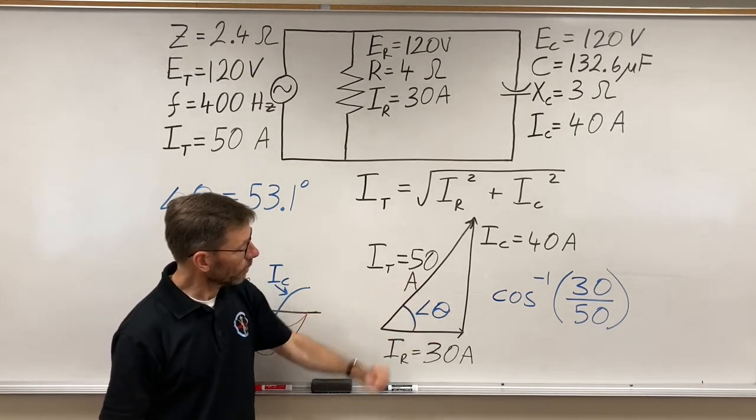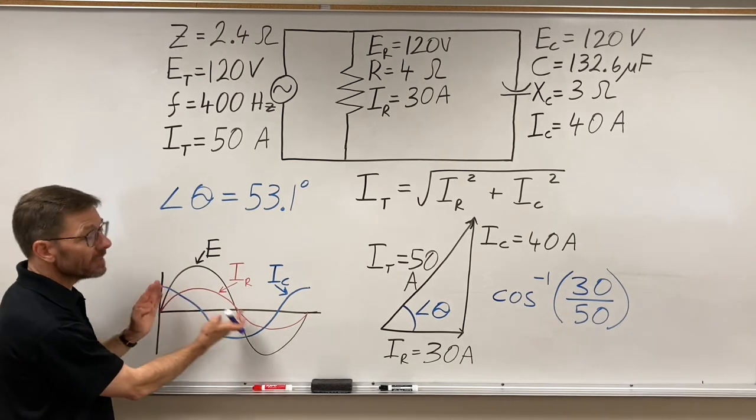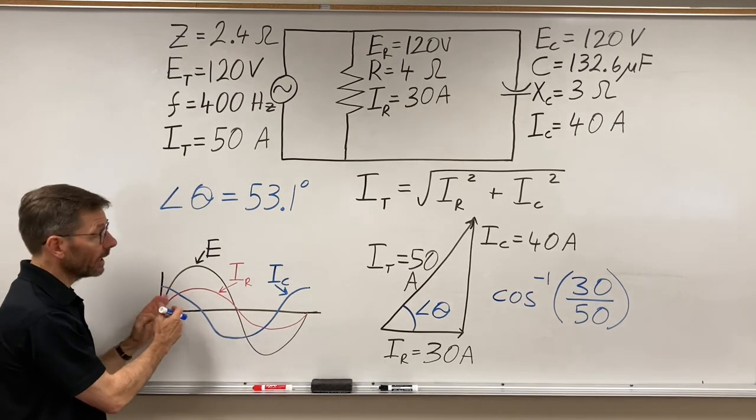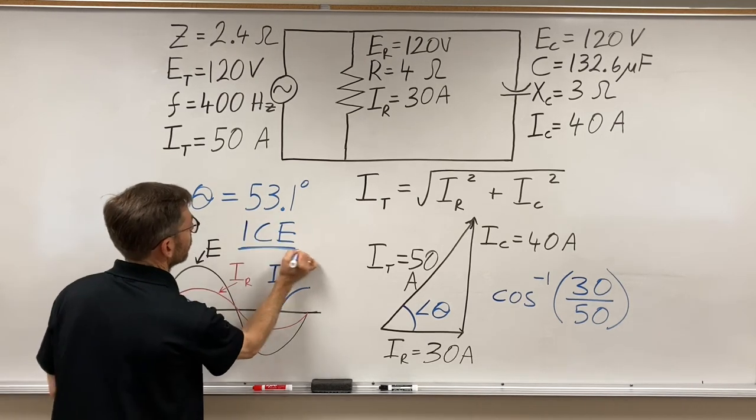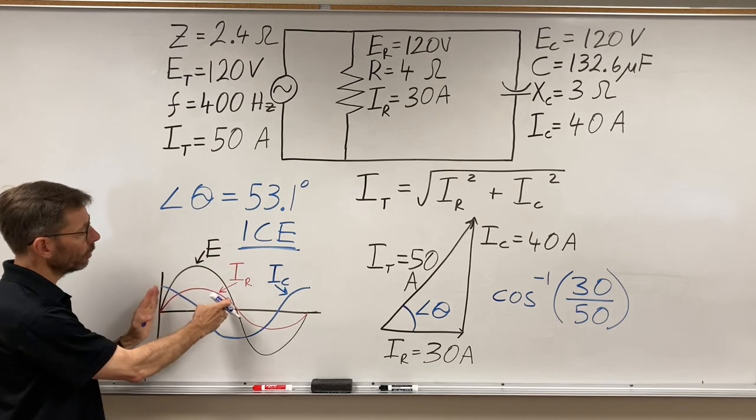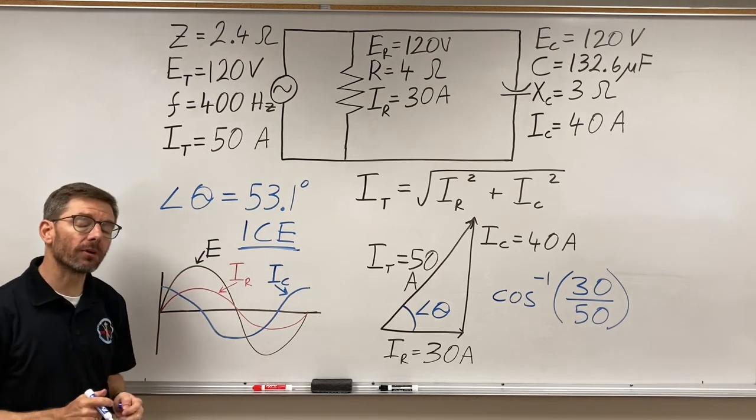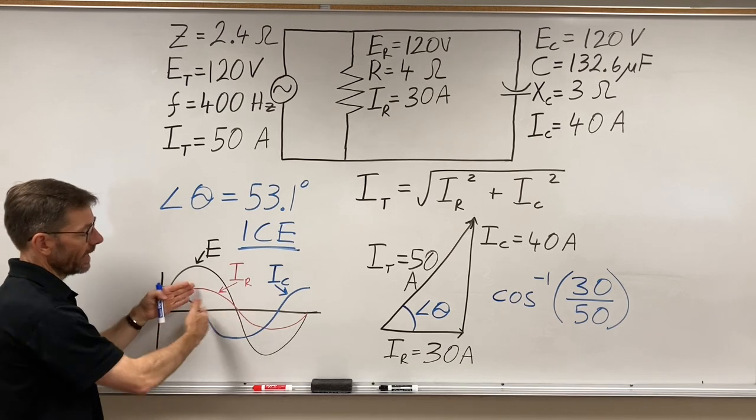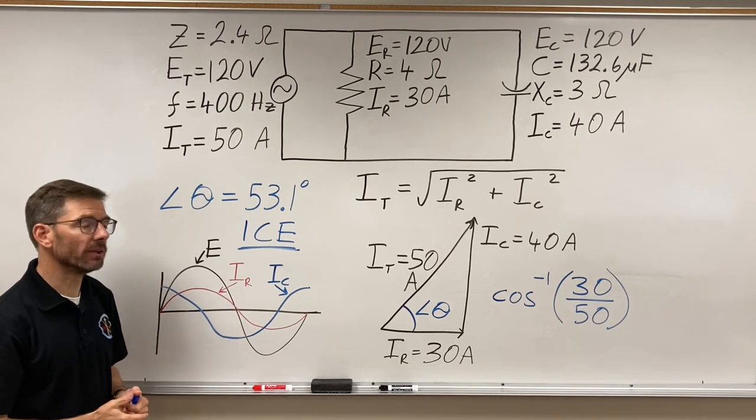And that's what that angle would be. So that would mean that the net current, the total current, will be leading, in a capacitor, current leads, the current would be leading the voltage by 53.1 degrees. That is the combined, the vectorally combined current.